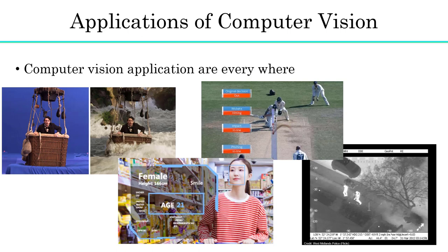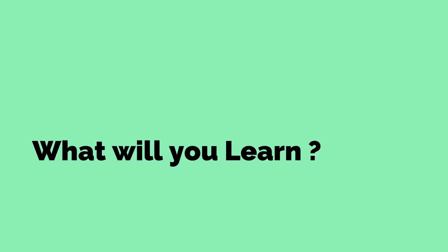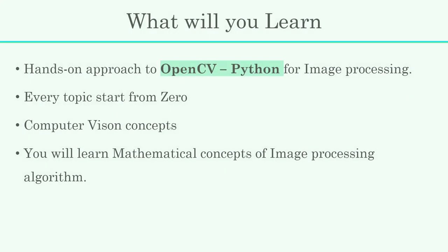Computer vision is an exciting field with endless possibilities. To explore it, we need to understand image processing concepts used internally in computer vision algorithms. In this course, we will use the OpenCV library. Every topic and algorithm will start from zero - I will teach you the essential background and mathematical concepts wherever required. This will help you understand algorithms and know when to apply them for which particular application.